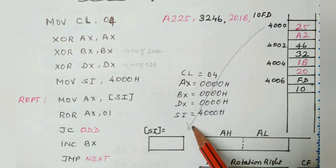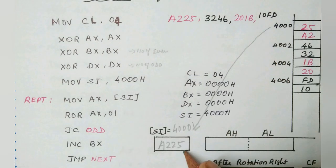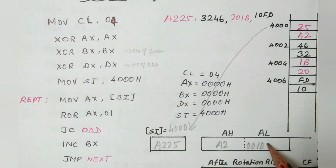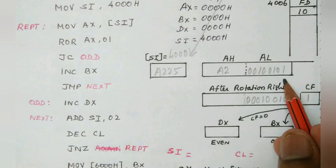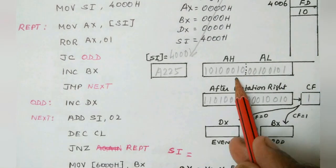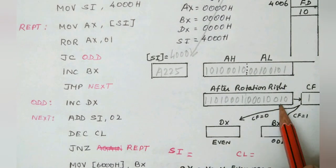In the first iteration, SI points to the location 4000H. In this location, the number present is A225. That is moved to the AX register. We won't bother about the higher bytes of AX register because we are going to move in the right side. So first of all when we move, the carry flag sets because the LSB bit will be 1.